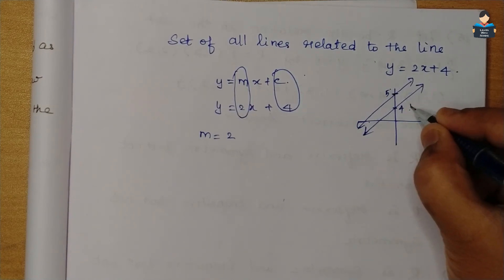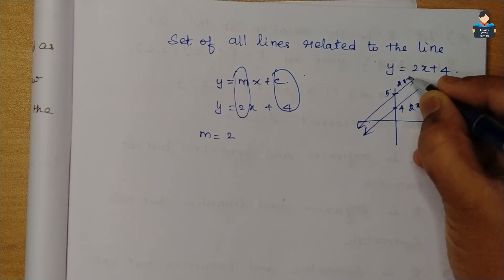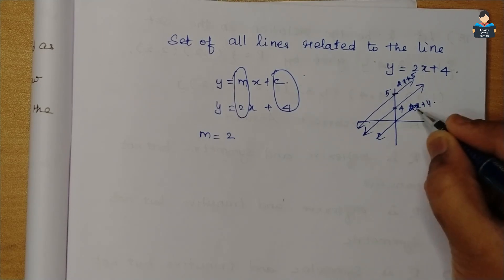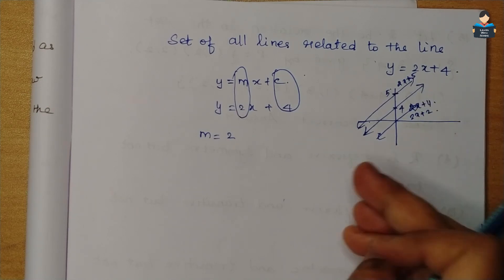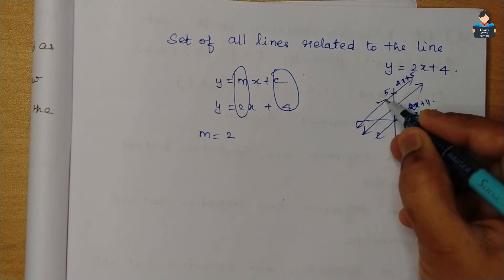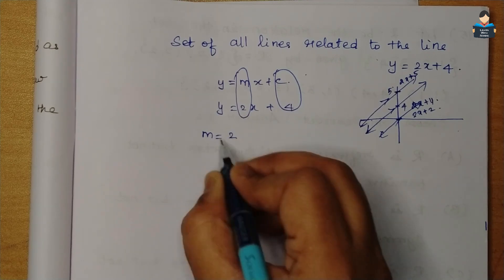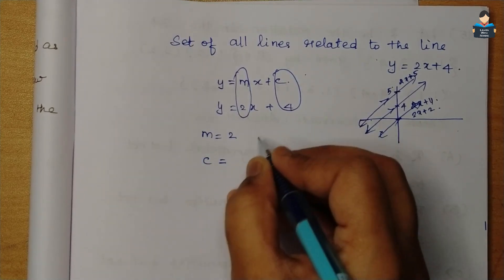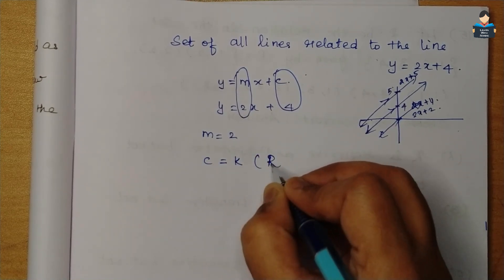The given line is y = 2x + 4. Any line parallel to this will have the same slope, so lines of the form y = 2x + c. For example, y = 2x + 5, where c can be any real number.